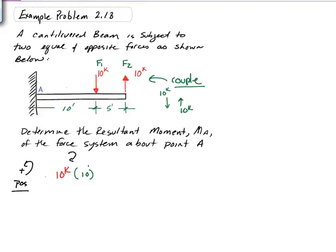And then we have another 10 kips and it is 15 feet from point A. And it is trying to spin in a counterclockwise sense, so that would give a positive. And that is equal to the moment about point A.